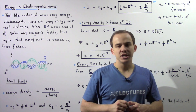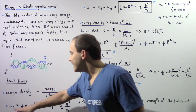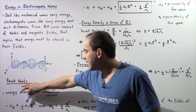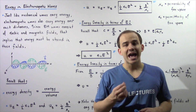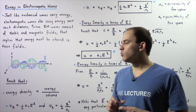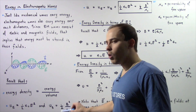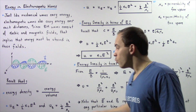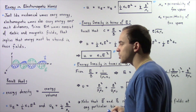In our discussion on the energy stored inside electric fields, we showed that the energy density inside an electric field is equal to one half multiplied by epsilon naught multiplied by the square of the electric field. And for magnetic fields, the energy density is equal to one half multiplied by the square of the magnetic field divided by mu naught, where epsilon naught is the permittivity of free space and mu naught is the permeability of free space — both constants.